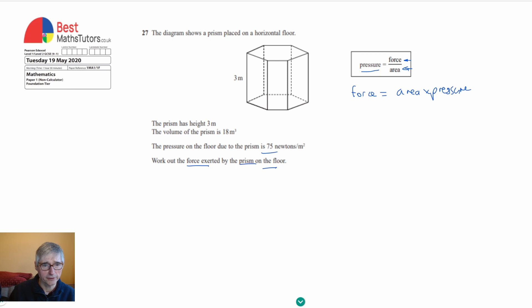We're given what the pressure is. The pressure is 75 newtons, so we can say that the force, if I substitute that value, equals 75 times the area. In order to complete the question, I need to find out what the area is.